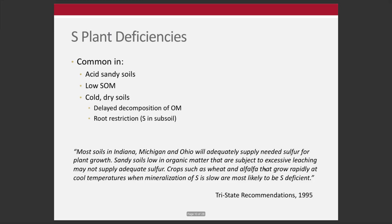The tri-state recommendations state that most soils in Indiana, Michigan, and Ohio will adequately supply needed sulfur for plant growth. Sandy soils low in organic matter may not be able to supply adequate sulfur. Crops such as wheat and alfalfa that grow rapidly at cool temperatures when mineralization of sulfur is low are most likely to be sulfur-deficient. Acid sandy soils restrict microbial activity; low soil organic matter soils and cold dry soils cause delayed decomposition and restrict root acquisition of sulfur from the subsoil.